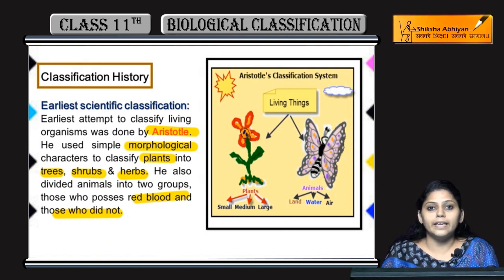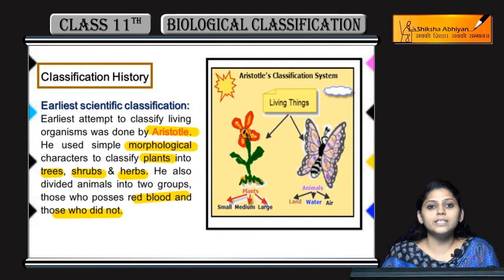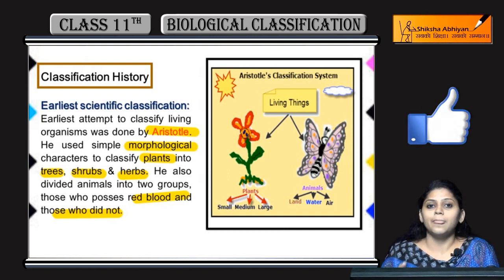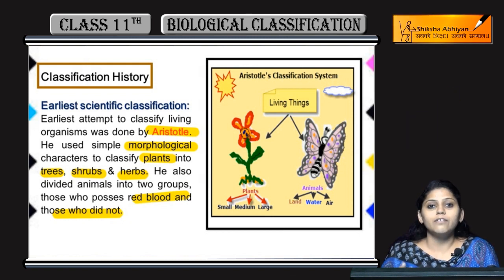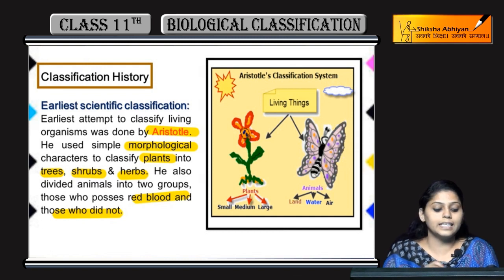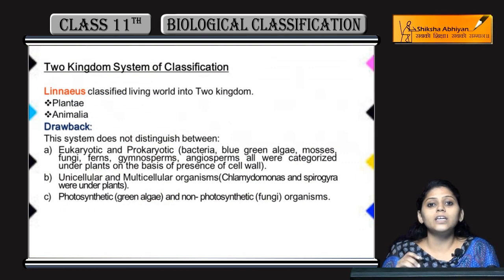Are they land animals, water animals, or air animals? But yeh classification system fail ho gaya because kuch aise organisms the jo kisi bhi classification mein nahin aa rahe the — na wo plants the, na wo animals the. For example, fungi — fungi na plant hai na animal hai. So un organisms ko yeh classify nahin kar paya. Next aaya Linnaeus, jisne two-kingdom system of classification diya, jismein aaye Plantae and Animalia.